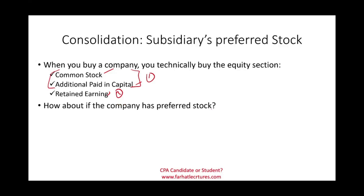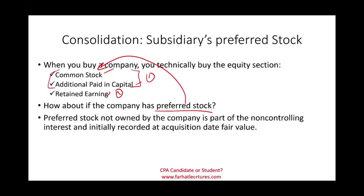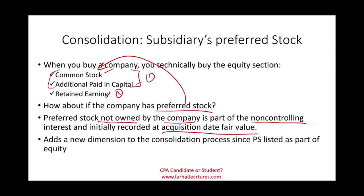But what if the company also has preferred stock? A company could have both common stock and preferred stock. When you buy the company, you're going to buy the common stock and pay something separately for the preferred. Preferred stock not purchased by the parent company will become part of the non-controlling interest, initially recorded at the acquisition date fair value. So now you are buying two different things: common stock, additional paid-in capital, and retained earnings — and also paying a separate price for the preferred stock. This adds a new dimension to the consolidation process, since preferred stock is listed as a separate component on the equity section.